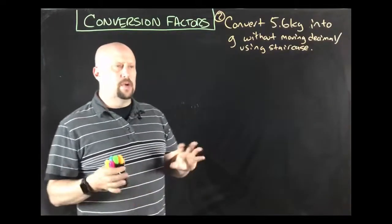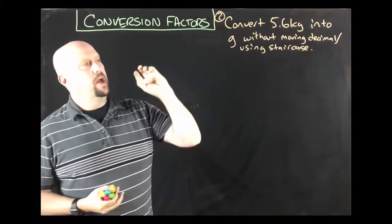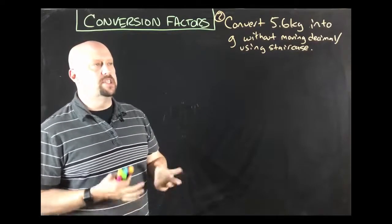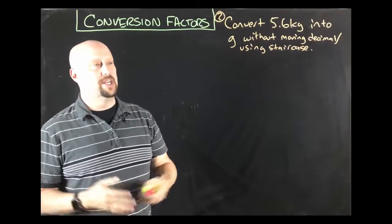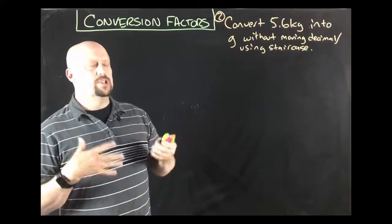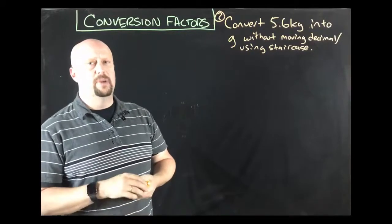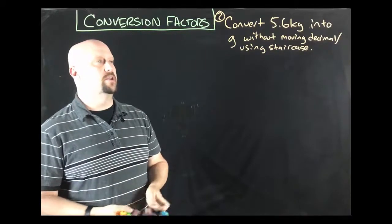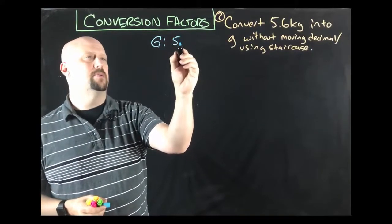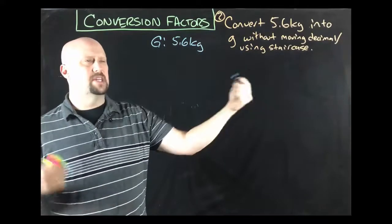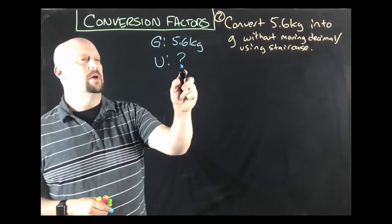All right, so for our next problem, again, a really simple one stepper. We'll do two steppers when we get in the next video, when we work some in class. But we're going to take a metric one. So we want to convert 5.6 kilograms into grams. I'm going to put the stipulation on it that you can't just move the decimal or use the staircase. And again, this is one of those problems that you could do in your head. But I want you to stop, pause, write it down, make sure that you can do it in the conversion factor way, because learning it the easy way now will make your life a lot easier later on. So I'm going to do my given and unknown thing again. So my given is 5.6 kilograms. And in this case, I didn't even really say what it was. So it's just 5.6 kilograms. My unknown is grams.